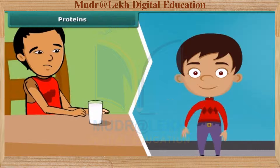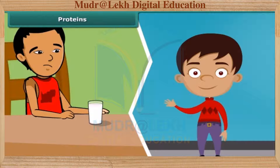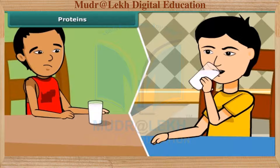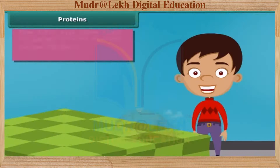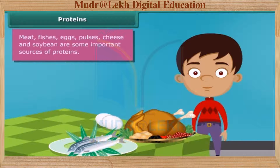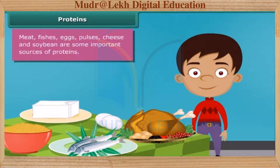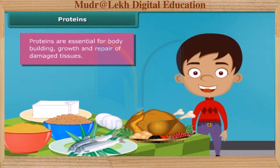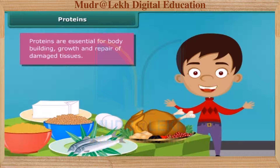You might have noticed that some children who do not drink milk become weak and are underdeveloped because milk contains required proteins for our growth. Meat, fishes, eggs, pulses, cheese and soybean are some other important sources of proteins in our diet. The major role of proteins is building and repairing of damaged tissues. Along with carbohydrates, they are also a source of energy.